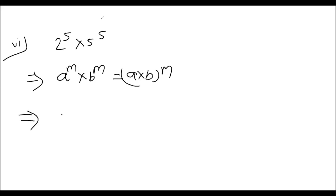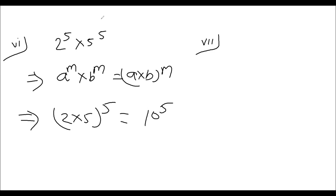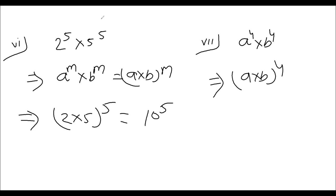The answer will be 10 to the power 5. Next question — Question number 7: A to power 4 into B to power 4. Here the base is different but the power is the same. Using the formula, this equals A times B to the power 4. This is our answer.